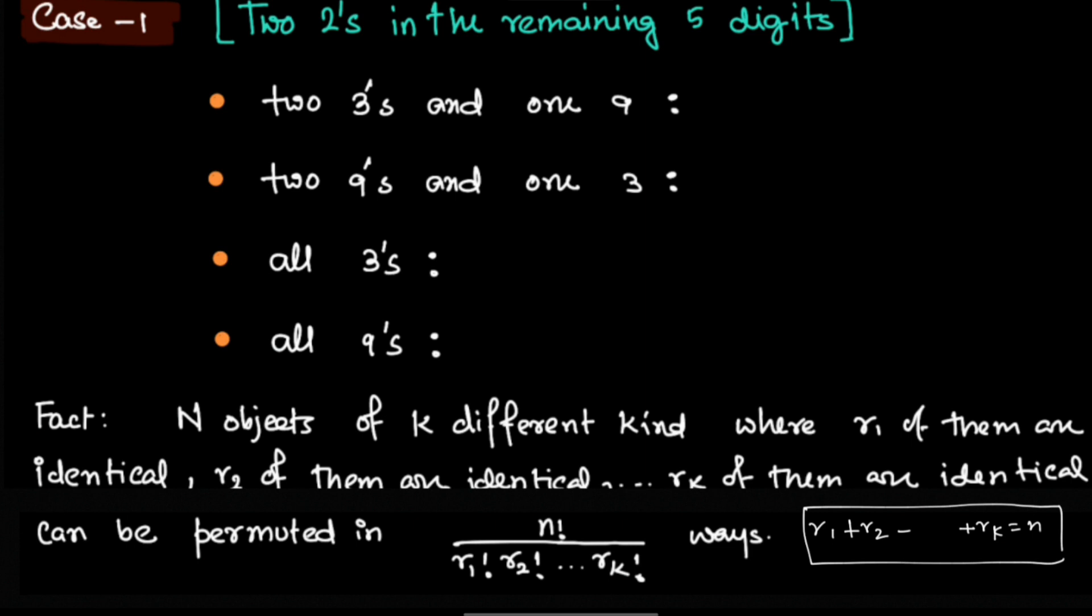Now using this fact, in the first case we have two 3s, so 2 identical objects, we have one 9, and two 2s - that's 2 identical objects, and one 2 is fixed.